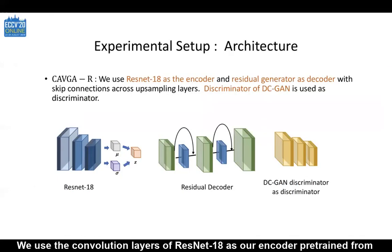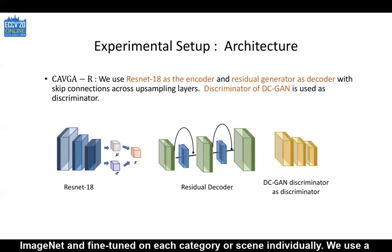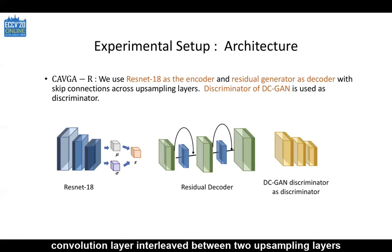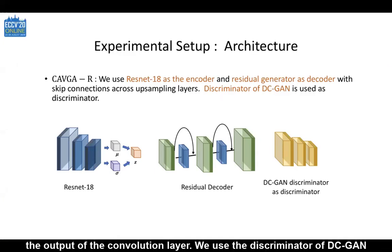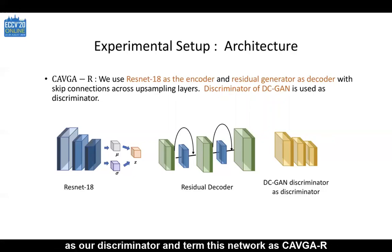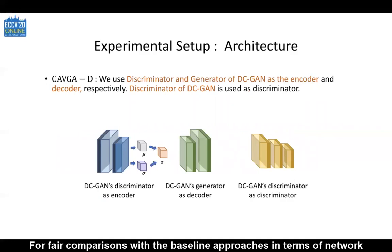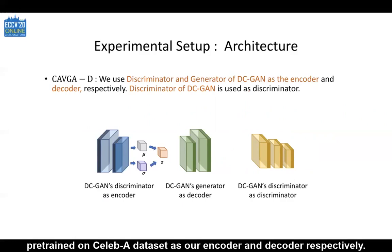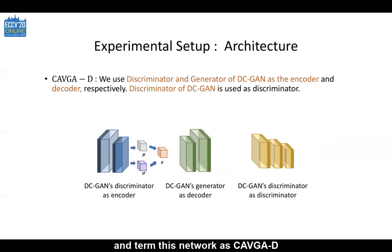We use the convolution layers of ResNet-18 as our encoder, pre-trained from ImageNet and fine-tuned on each category or scene individually. We use a residual decoder with a convolution layer interleaved between two upsampling layers. The skip connection is added from the output of the upsampling layer to the output of the convolution layer. We use the discriminator of DCGAN, pre-trained on the CelebA dataset and fine-tuned on our data as our discriminator, and term this network as CAVGA-R. For fair comparison with the baseline approaches in terms of network architecture, we use the discriminator and generator of DCGAN pre-trained on CelebA as our encoder and decoder respectively, and term this network as CAVGA-D.